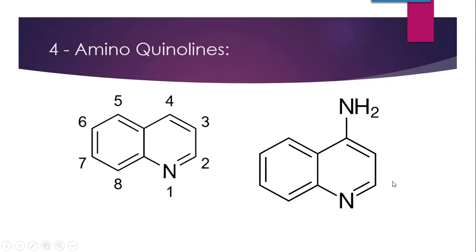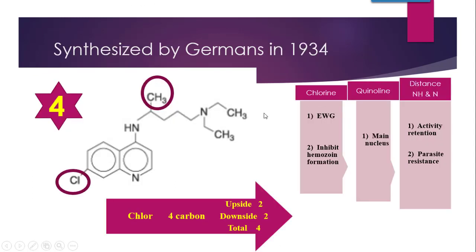Since chloroquine belongs to the class of 4-aminoquinolines, this 4-aminoquinoline moiety will be the basic structure present in every drug of this class. Other drugs in this class include amodiaquin, hydroxychloroquine, and chloroquine — hydroxychloroquine is actually a metabolite of chloroquine. Chloroquine itself was synthesized by Germans in 1934.